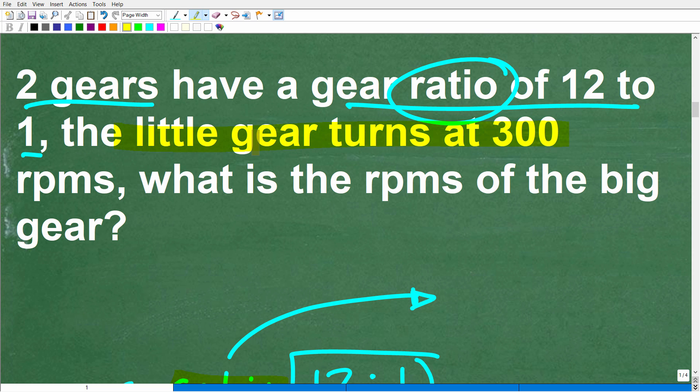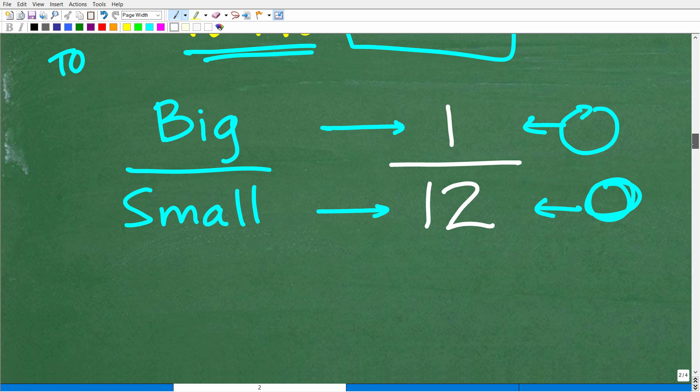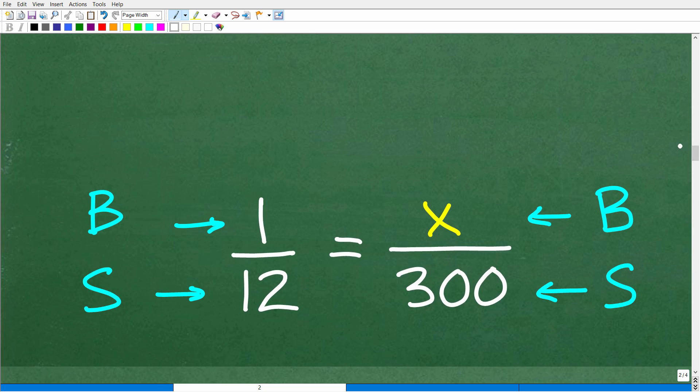We know how many times the little gear is actually turning. We want to know how many times the big gear will turn. We're going to need to set up a proportion.